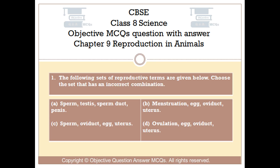Question number 1. The following sets of reproductive terms are given below. Choose the set that has an incorrect combination. Option A: Sperm, testis, sperm duct, penis.